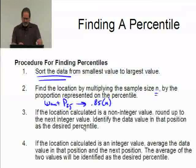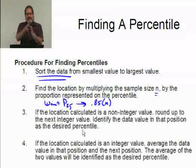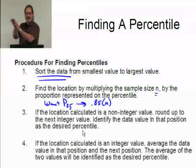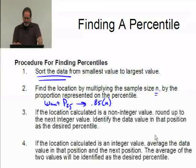Now if the location calculated is a non-integer value, well, suppose n was 100. 0.85 times 100 is 85. That's integer value. If it was 99, 0.85 times 99 is going to be 85 point something or other. If the location is a non-integer value, I'm going to round up to the next integer value. So if I end up with 85.6, that's telling me go to the 86th position, go to the next position up. And then I'm going to identify the data value in that position.